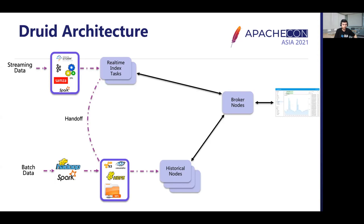Druid's architecture involves multiple node types, where each node type is designed and optimized to perform a specific set of tasks. The first set of components are the real-time index tasks. Real-time index tasks handle real-time ingestion supporting both pull-based and push-based ingestion, and they can also serve queries on data as soon as it is ingested in memory. They store data in a write-optimized data structure on JVM heap, and periodically convert this into read-optimized, time-partitioned immutable segments.